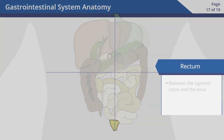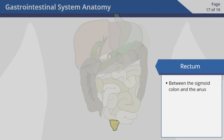The rectum is located between the sigmoid colon and the anus. The rectum receives stool from the colon and holds it until you can go to the bathroom.